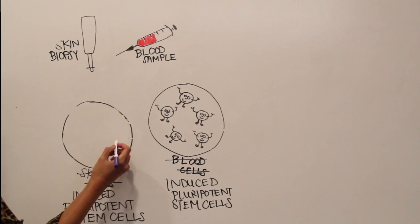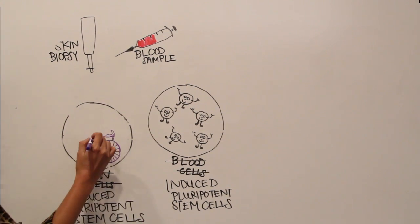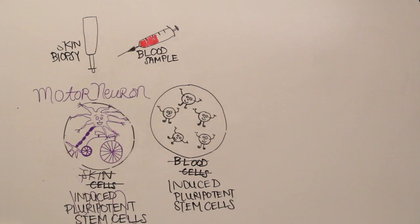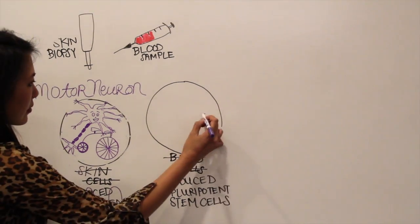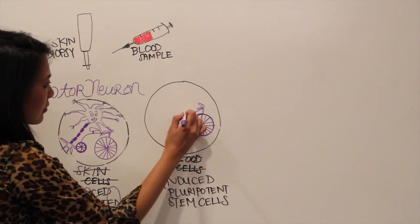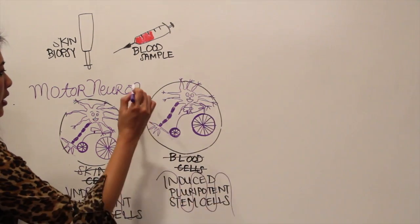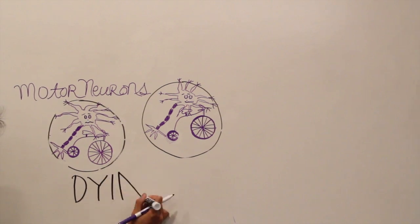IPS cells are useful because they can be reprogrammed to any cell in the body. In our case, we differentiate these IPS cells into motor neurons. And because these cells are taken from patients that have ALS, a genetically caused motor neuron disease, these reprogrammed motor neurons recapitulate that disease in the petri dish and quickly start dying.